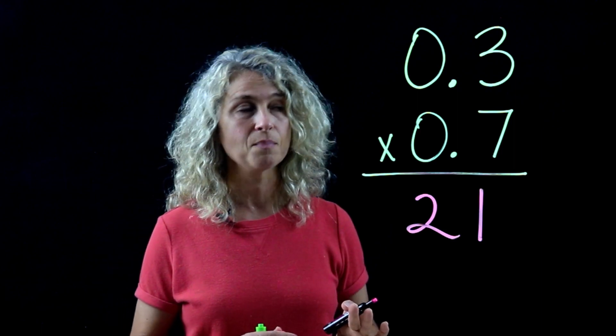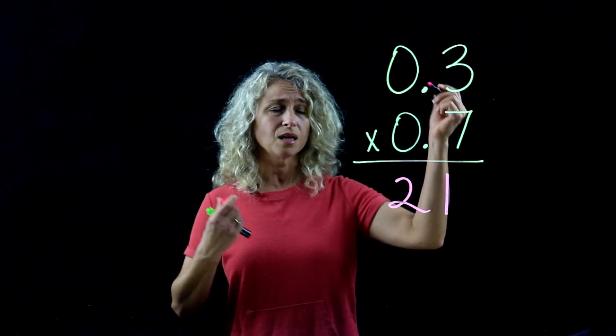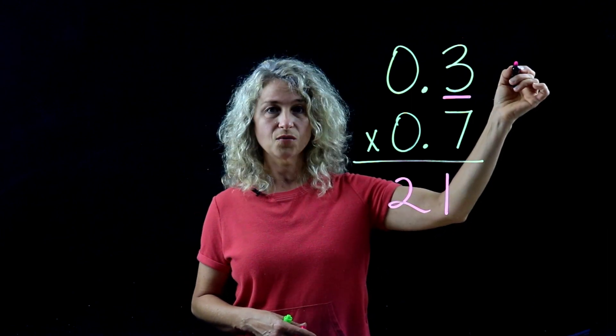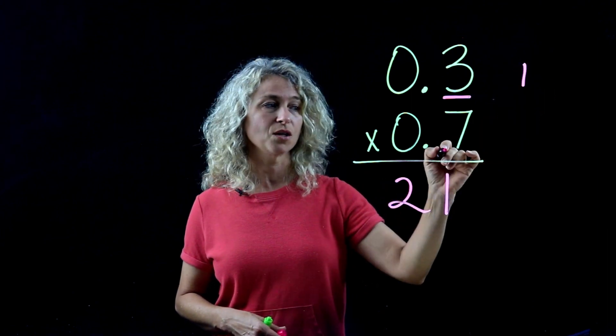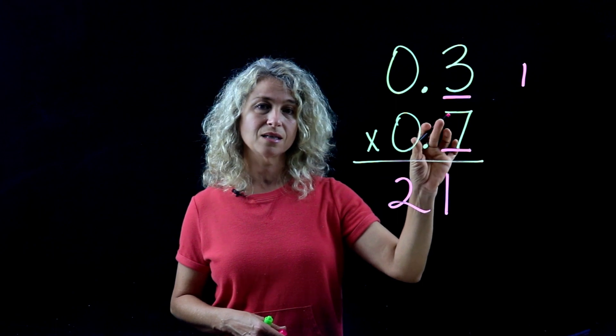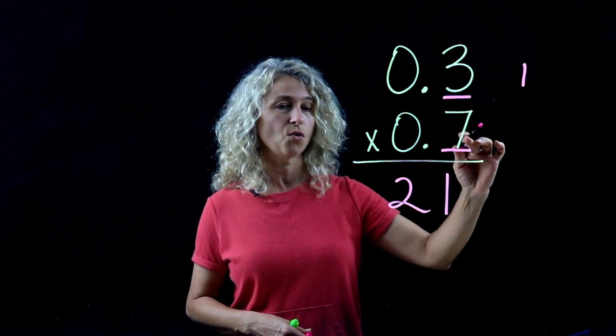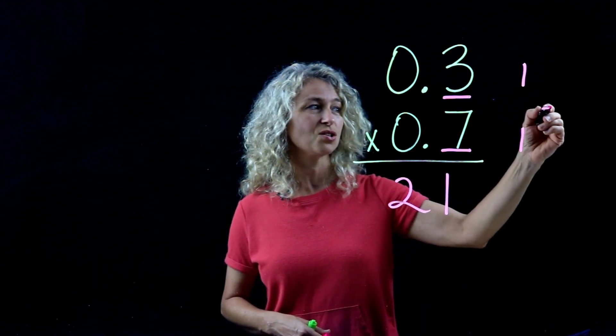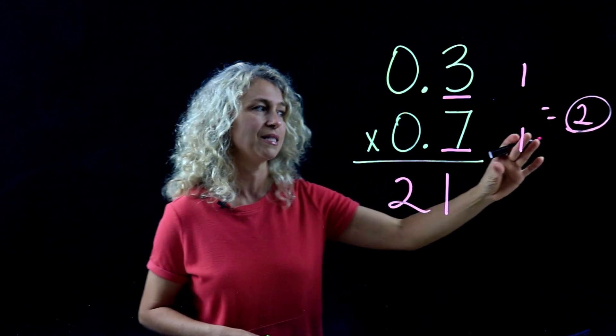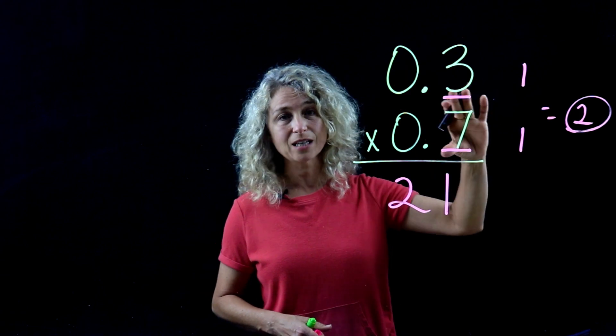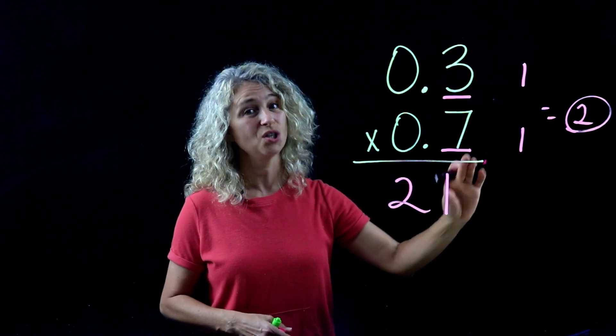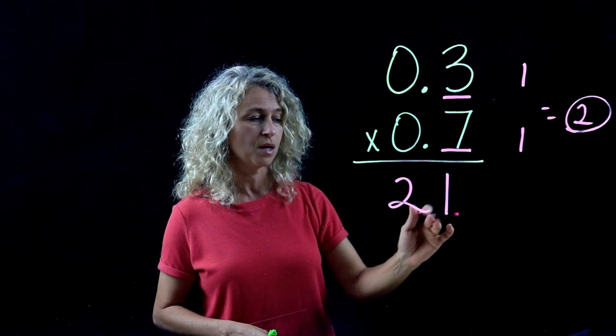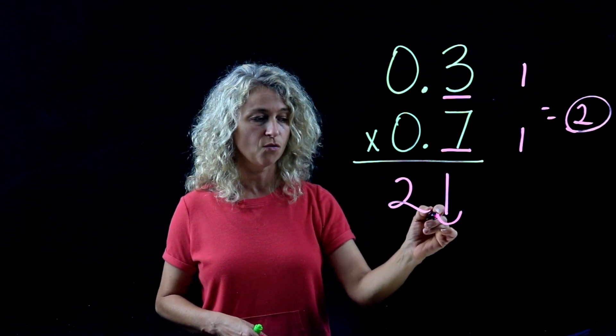There is one place to the right of the decimal for this factor, and there is one place to the right of the decimal for this factor. 1 and 1 equals 2, so there are two decimal places in the factors up here, and we need two decimal places in our product below.